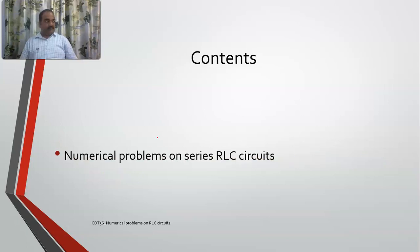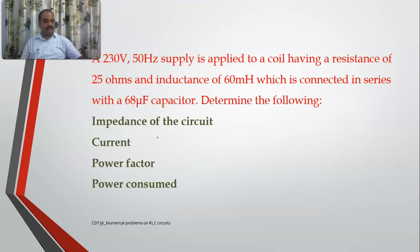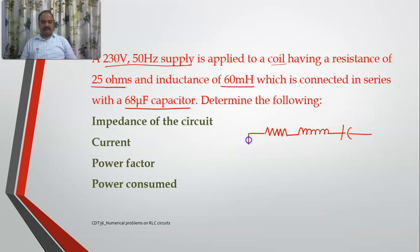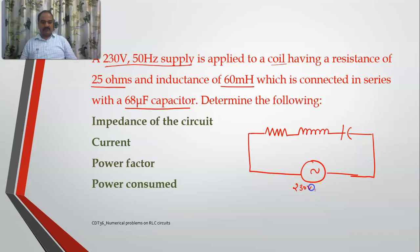So this is the question. A 230 volts, 50 hertz supply is applied to a coil having a resistance of 25 ohms and inductance of 60 millihenry, which is connected to a 68 microfarad capacitor. This means there are three elements in this circuit: a resistor, an inductor, and a capacitor, excited by a single phase AC supply of 230 volts, 50 hertz.